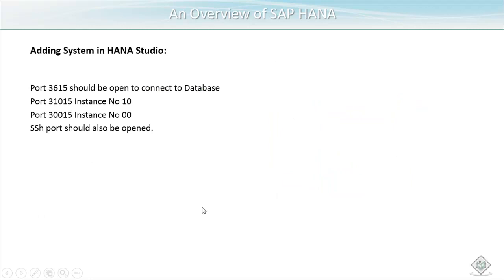When adding a system in SAP HANA Studio, there are specific port requirements to keep in mind. Port 3615 must be open to connect to the database, port 31015 corresponds to instance number 10, port 30015 corresponds to instance number 00, and the SSH port must also be open.